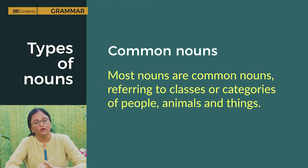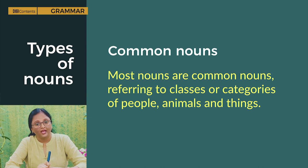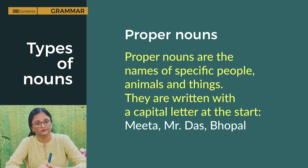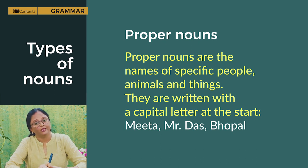Most nouns are common nouns, referring to classes or categories of people, animals and things. Proper nouns are the names of specific people, animals and things. They are written with a capital letter at the start — for example, Meeta with capital M, Mr. Das with capital M and D, B. Gopal with capital B.